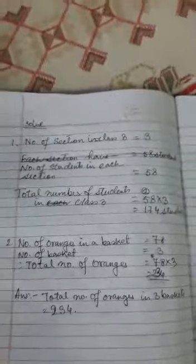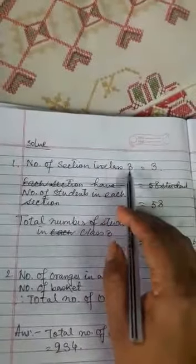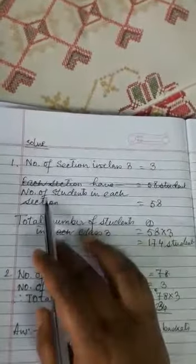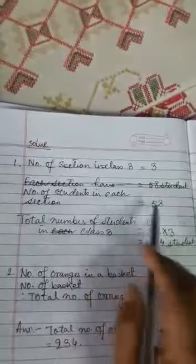Next page, there is a question in your book. You'll see number of sections in Class 3 is 3. Number of students in each section is 58.